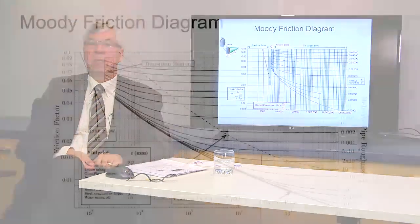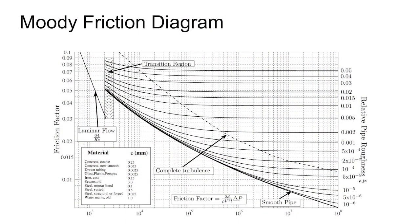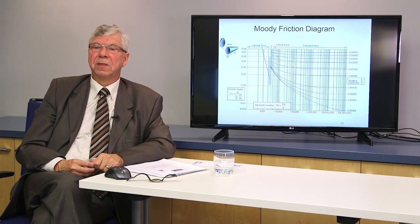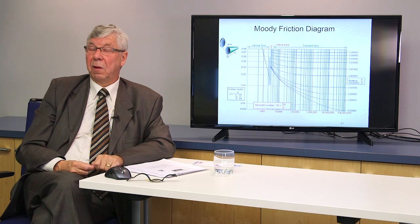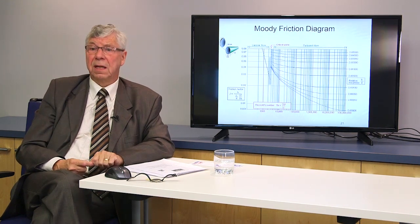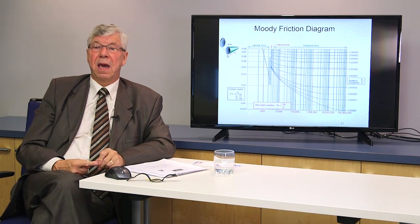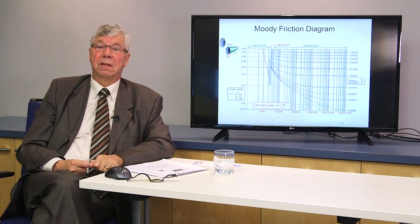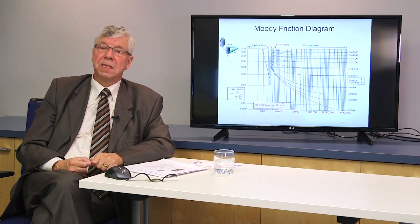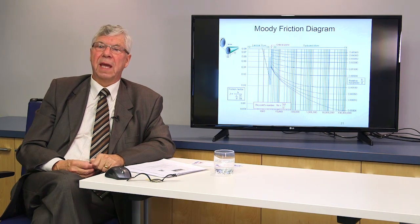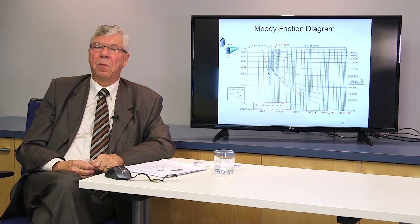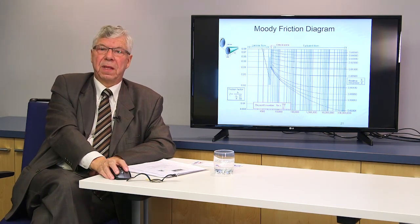The Moody friction diagram plots relative roughness k/D on the right axis, Reynolds number (V × D divided by kinematic viscosity) on the bottom axis, and friction factor on the left axis. Except at very low laminar flows on the far left, the friction factor curves are non-linear and must be looked up or curve-fitted in computer models and software packages.